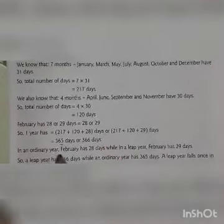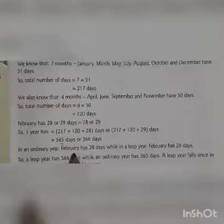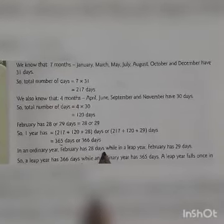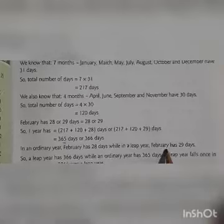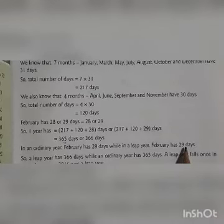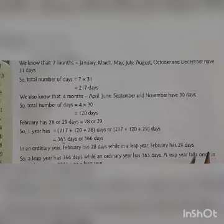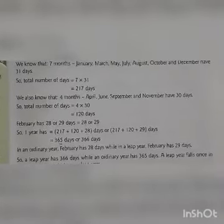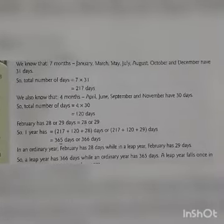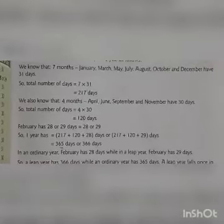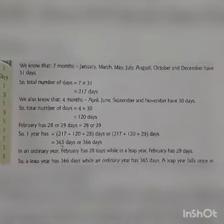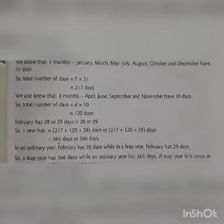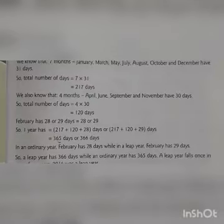In an ordinary year, February has 28 days, and there are 365 days in total. In a leap year, February has 29 days, and there are 366 days.